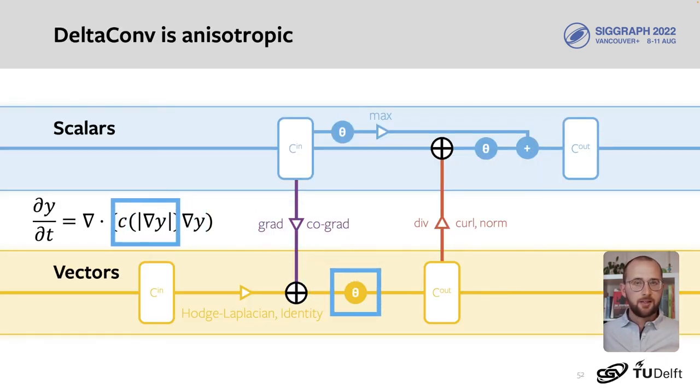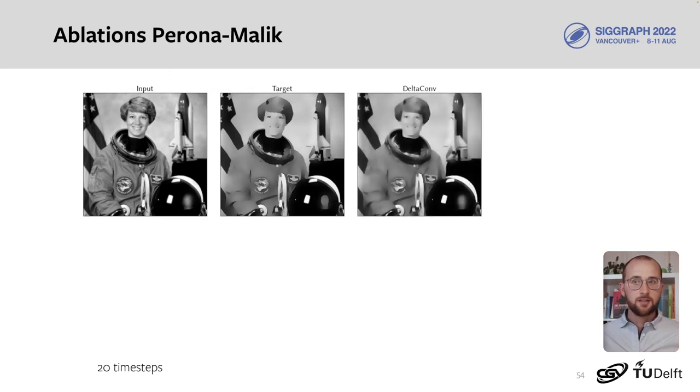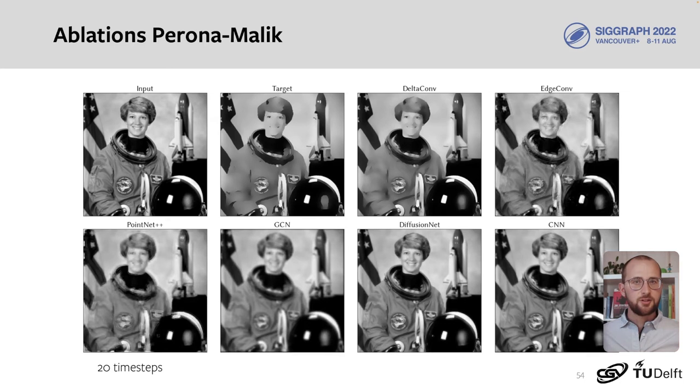DeltaConv has all the building blocks necessary to perform anisotropic diffusion. Gradient, a nonlinearity on vector norms, and divergence. We can demonstrate this nicely on an image. We set up a simple ResNet and feed the unfiltered image as input. The network is then optimized to output the target image, which was created with 20 anisotropic diffusion steps. A network with DeltaConv can match the result, where previous point cloud and image convolutions struggle.